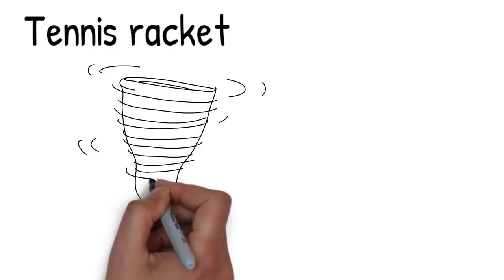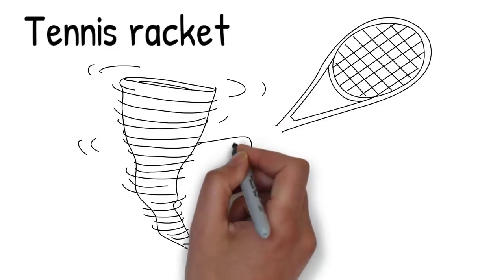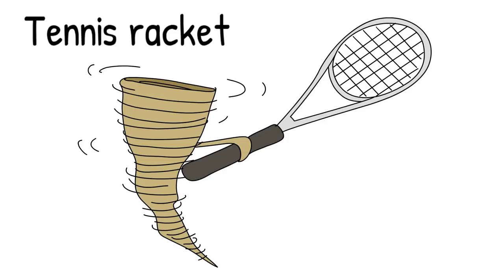It turns out the tornado is a huge fan of tennis and it pulls out a tennis racket and starts swinging it around. Now it just needs somebody to play against.